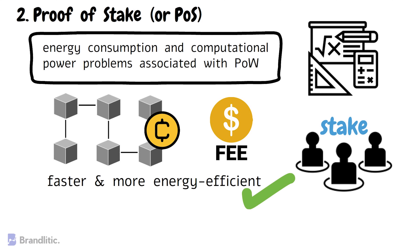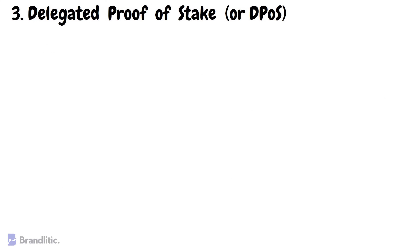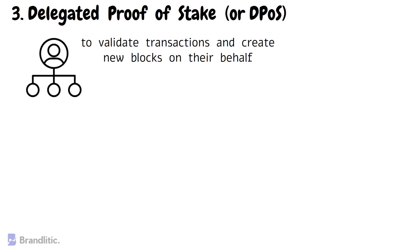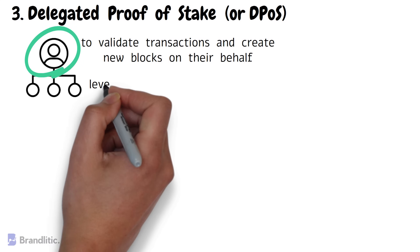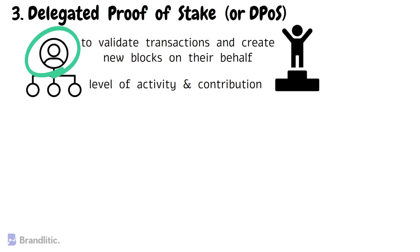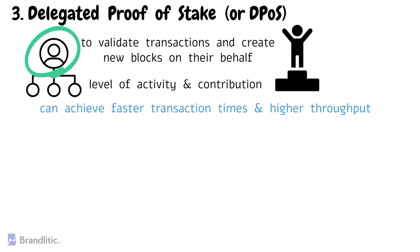Proof of Stake can be divided into two parts: Delegated Proof of Stake and Leased Proof of Stake. Delegated Proof of Stake, or DPOS, is a variant of the Proof of Stake consensus algorithm. In this, token holders vote for a group of delegates to validate transactions and create new blocks on their behalf. These delegates are typically chosen based on their level of activity and contribution to the network. DPOS can achieve faster transaction times and higher throughput compared to other consensus algorithms like Proof of Work, due to the delegation of validation to a smaller group of trusted nodes. It is used in blockchain networks like EOS and Tron.